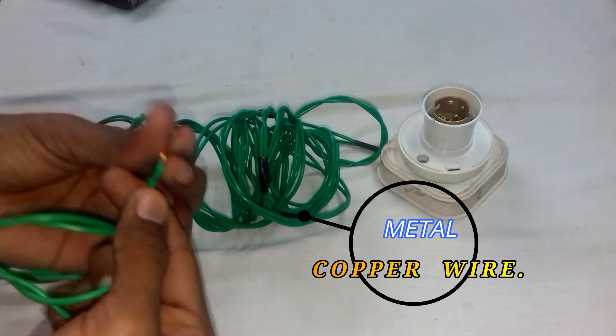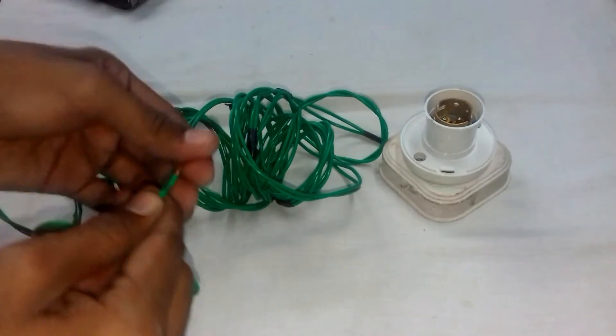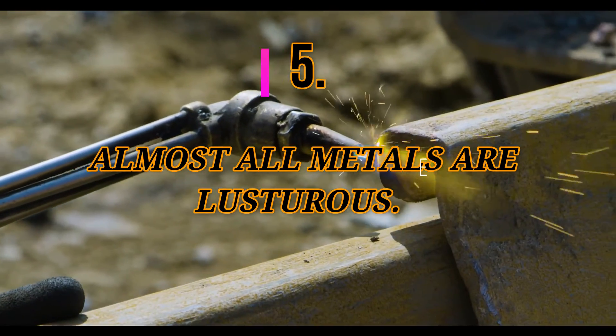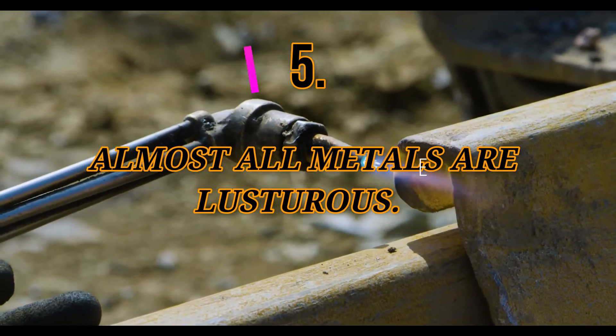Metals are lustrous, that means they have shiny surface. Almost all metals are shiny, for example aluminium and iron.